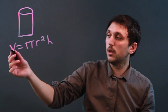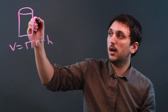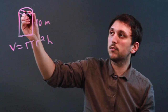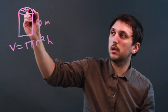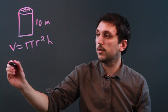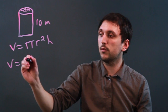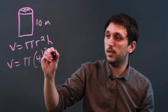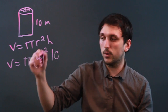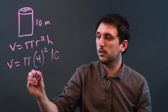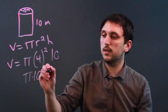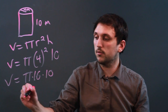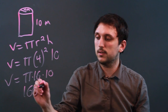Let's say we have a height of 10 meters and a radius of 4 meters. We're going to say V equals pi times 4 squared times 10. And 4 squared is 16, so pi times 16 times 10 equals the volume. And 16 times 10 is 160 pi.